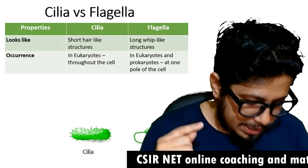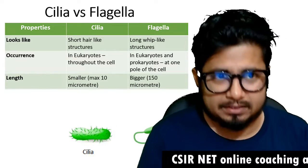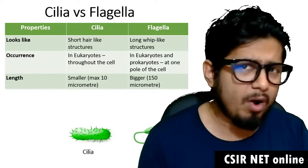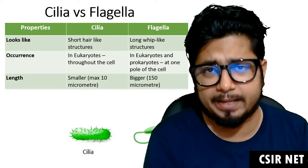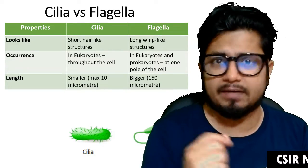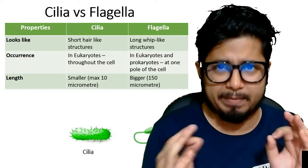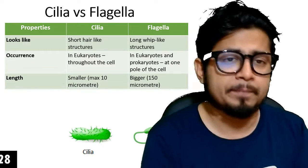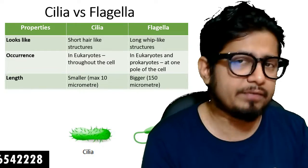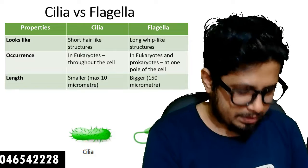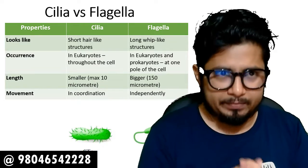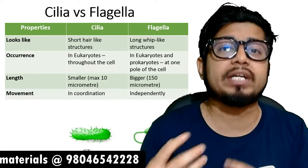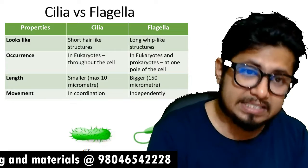The third important parameter is length. Cilia are much smaller — 10 to 15 times smaller than flagella. Cilia's length is normally a maximum of 5 to 10 micrometers, while flagella are 100 to 150 micrometers. Regarding movement, cilia move in coordination with one another, while flagella's movement is independent.